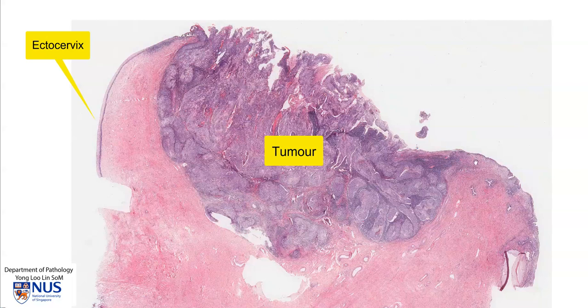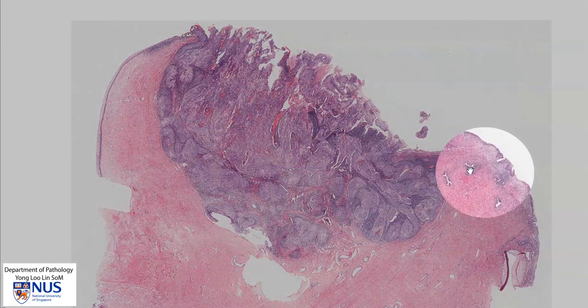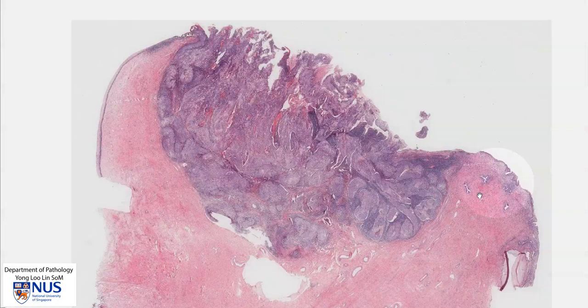Moving on to the right side, this is coming to the endocervical end, going upwards into the endometrial cavity. And here we have some endocervical glands that are dipping into the stroma, which is a normal finding.